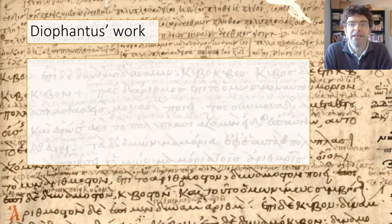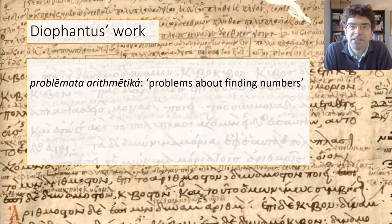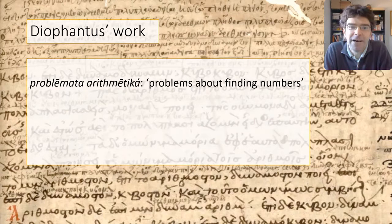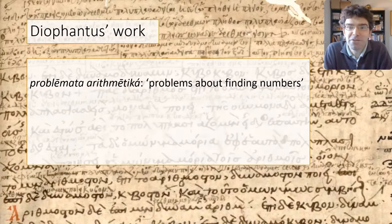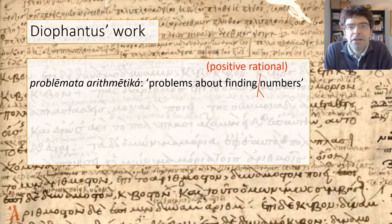We're not sure what Diophantus called his main work, but the conventional title is the Arithmetica, based on a phrase he uses to describe what he's up to: problemata arithmetica. You can probably see that we're dealing here with the roots of the English words 'problem' and 'arithmetic', but Diophantus is not doing what we call arithmetic. In Greek the phrase means something like 'problems to do with finding numbers, putting a value on quantities.' It's important to realize that when Diophantus talks about numbers, what he means in modern terms is quite specific: positive rational numbers. He isn't interested in zero, minus one, root two, pi, or anything like that — just natural numbers and their ratios.